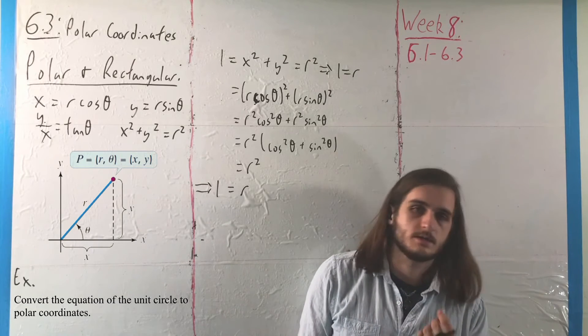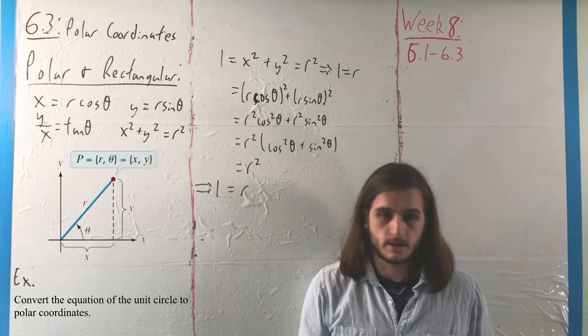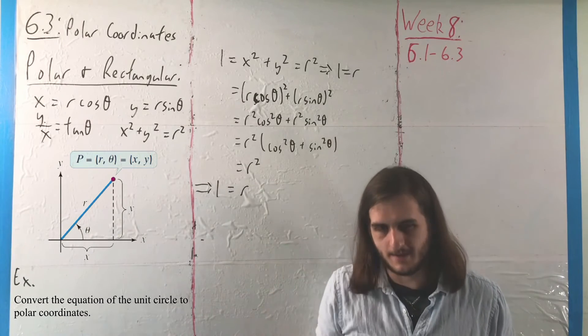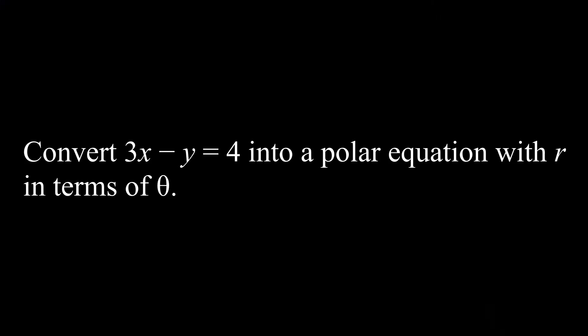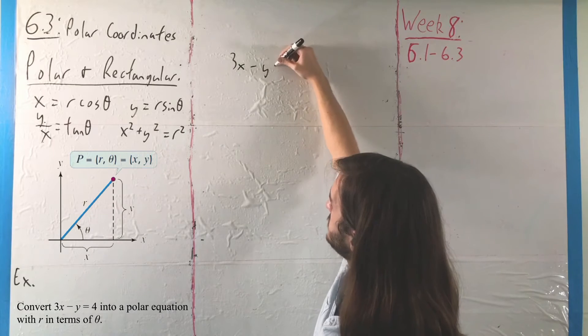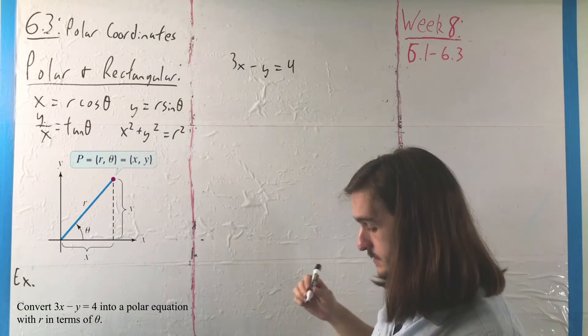And to appreciate this process a little bit more, we'll take one more quick example here with something that has a bit less of an obvious shortcut. So for our second example, we want to convert 3x minus y equals 4 into a polar equation with R in terms of theta.